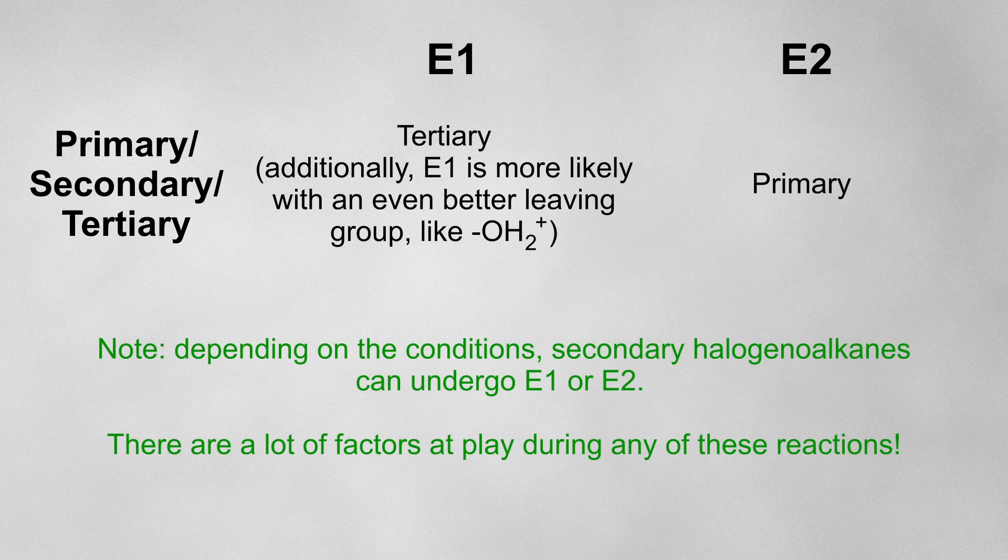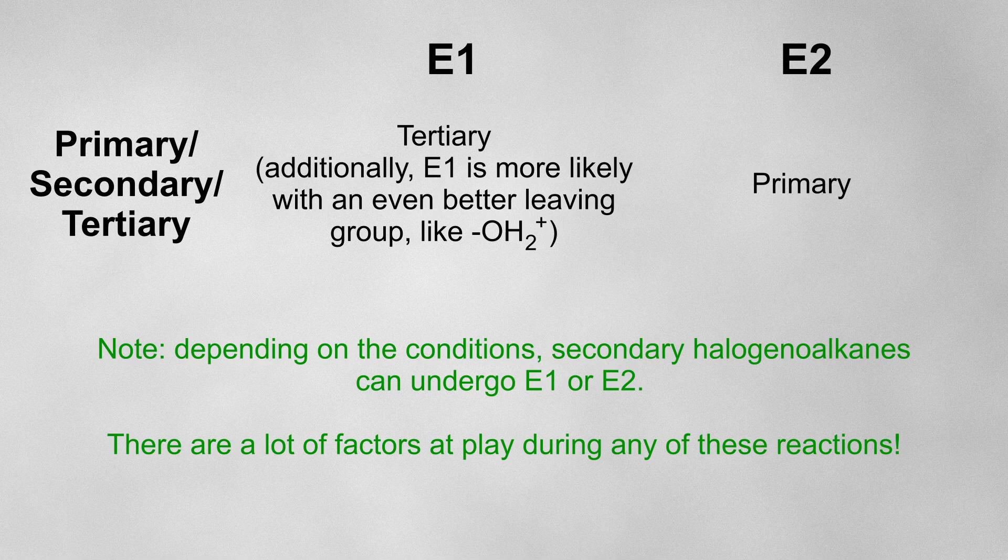This means that a tertiary haloalkane is more likely to undergo E1 in comparison to a primary haloalkane, due to the relative stability of the carbocation intermediates that will form.